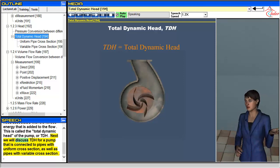Next we will discuss TDH for a pump that is connected to pipes with uniform cross section, as well as pipes with variable cross section.